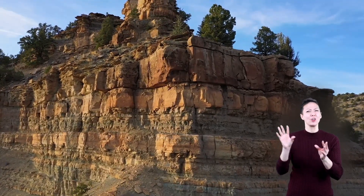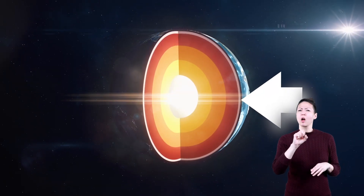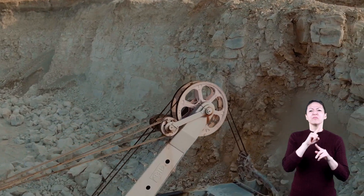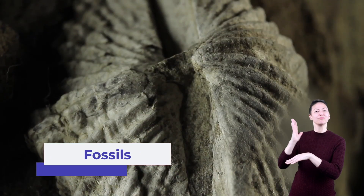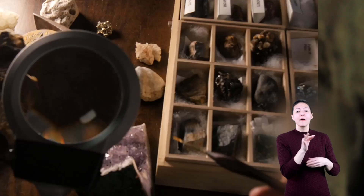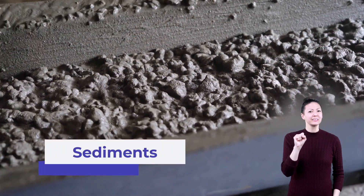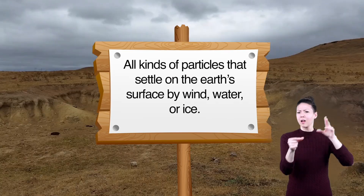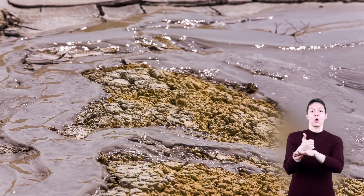Landforms are made up of all kinds of materials. Some of these materials are all over, like the Earth's crust, a rocky covering around the planet, and even dirt, which is a mixture of broken rocks and pieces of dead material from plants and animals. Fossils, which are the remains of things that once lived here on Earth, are less common than other materials. Fossils may be found in the dirt or even deeper in the crust below. There are also sediments — all kinds of particles that settle on the Earth's surface by wind, water, or ice, kind of like the alluvium that makes the fan-shaped landform we saw before.